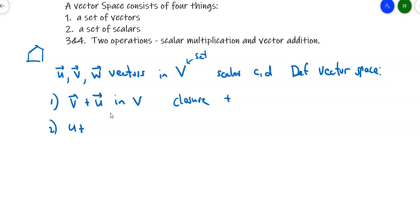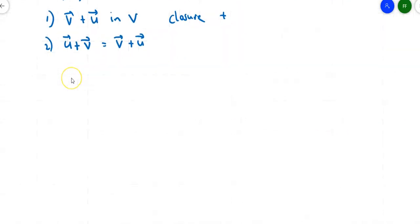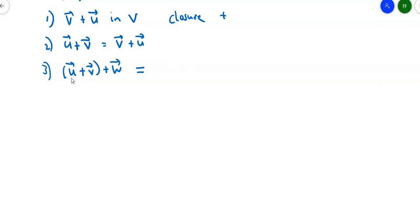The commutative property holds: if I add two vectors together, it doesn't matter which order I add them in. Since vector addition takes the two components individually and adds them, the commutative property holds for vector addition. The associative property also holds: vector U plus vector V, added to vector W, gives the same result as U plus the sum of V and W.